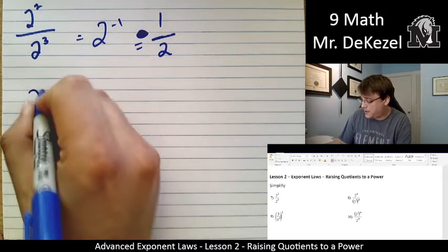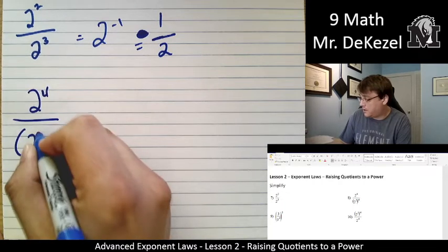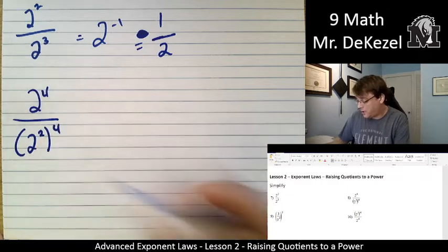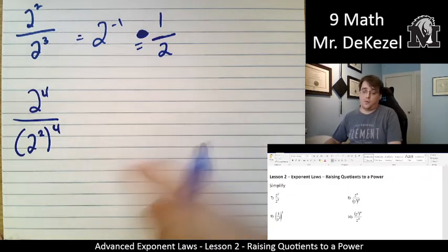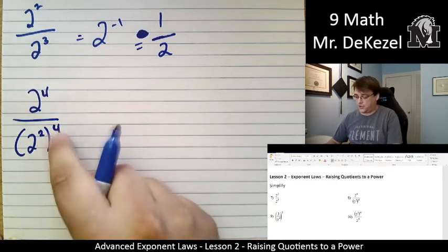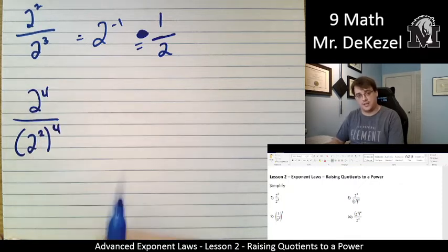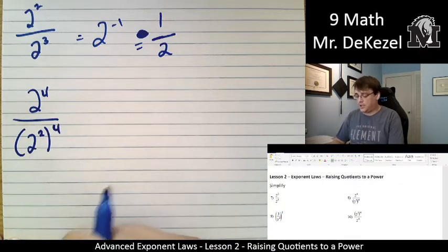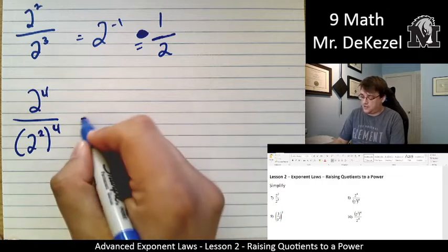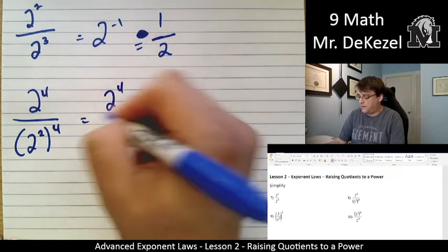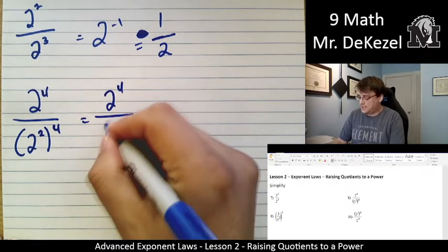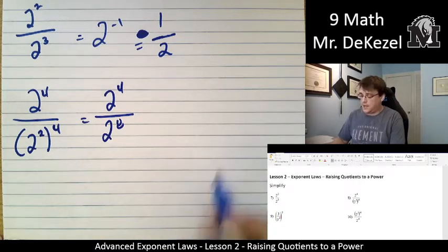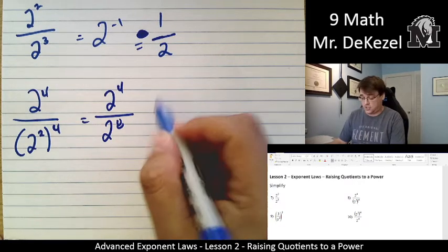We've got 2 to the power of 4 over 2 to the power of 2 to the power of 4. Okay, so in this case, we want to get rid of this extra exponent so that we can just go ahead and subtract. What we're going to need to do then is multiply these together. So this is the same as 2 to the power of 4 over 2 times 4 is 8, so that's 2 to the power of 8, and then we are going to subtract these two.